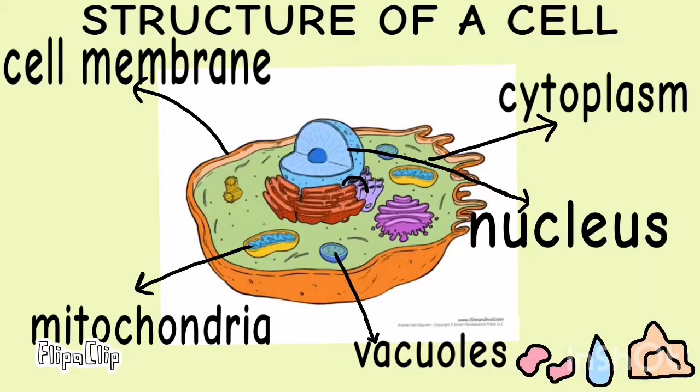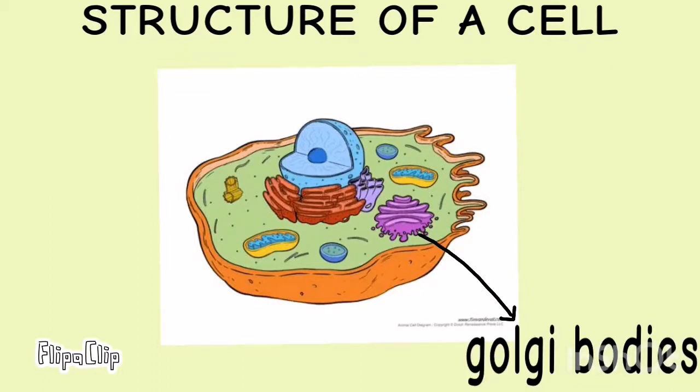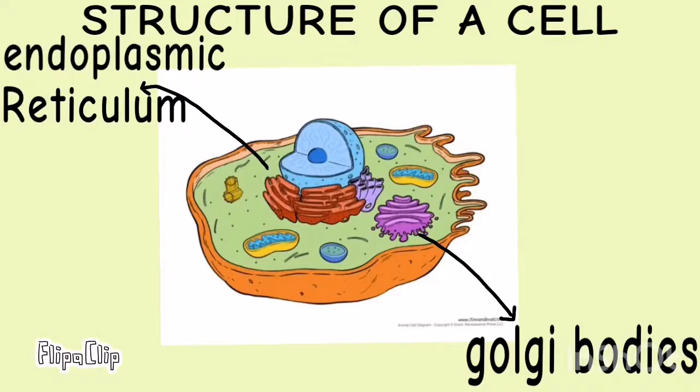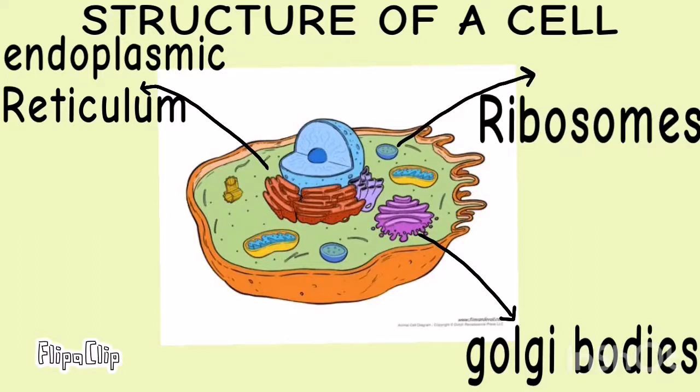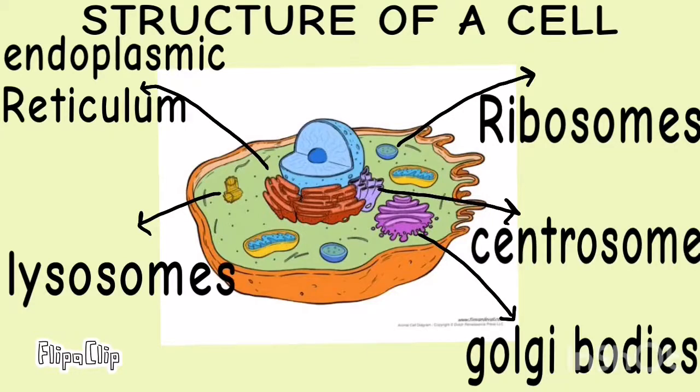In addition, there are Golgi bodies that secrete enzymes, endoplasmic reticulum that transports substances within the cell, ribosomes that make proteins, lysosomes that help destroy old cell structures, and centrioles that regulate cell division.